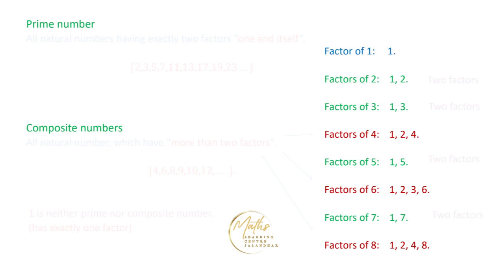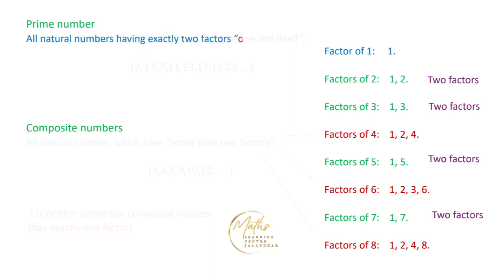Looking at the number of factors, the numbers 2, 3, 5, and 7 each have exactly 2 factors — one is the number 1 and the other is the number itself. All natural numbers that have exactly 2 factors are called prime numbers. The list of prime numbers is: 2, 3, 5, 7, 11, 13, 17, 19, 23 and so on.